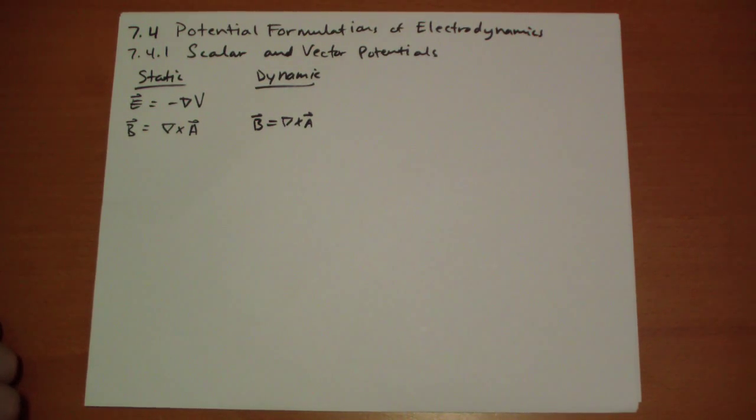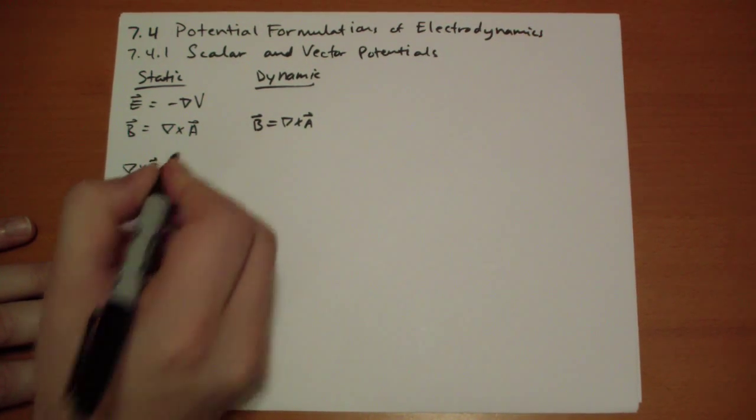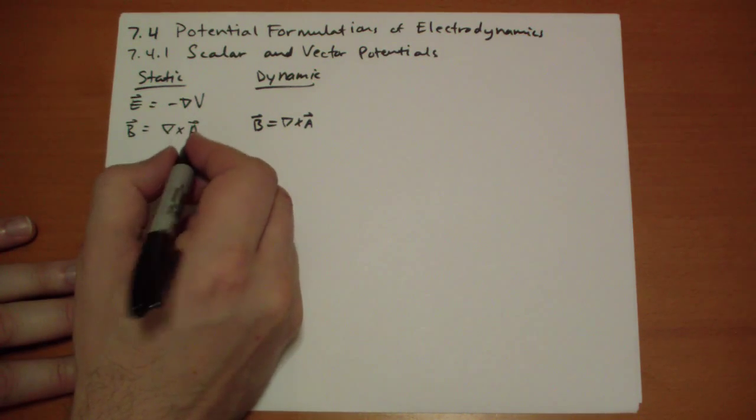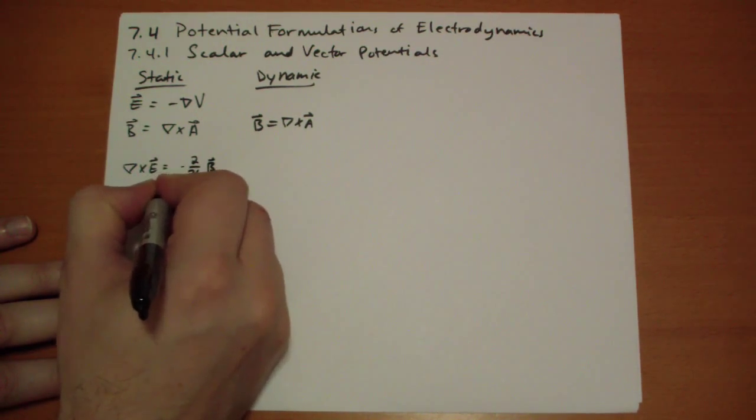So for the E field, we have to take into account the fact that the E vector depends on the change of the magnetic field. So let's run through that math really quick here. So the curl of E, Faraday's law, is equal to minus the time derivative of B vector.